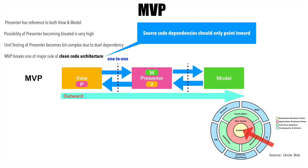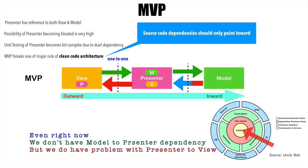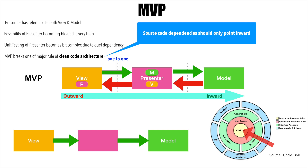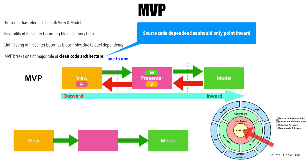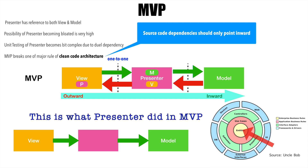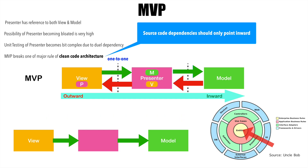In MVP, the view is the outer layer because that is where the flow starts from, and the model is the inner layer. So from view to Presenter and from Presenter to model is what we are good with. But what we should avoid is Presenter-to-view and model-to-Presenter dependencies. So how would a corrected design pattern look? Right now, we have not given any name to the middle layer that sits between the view and the model. The view has a reference to the middle layer, and the middle layer has a reference to the model, so there cannot be a direct dependency between the view and the model.